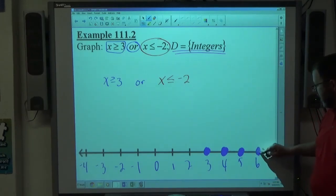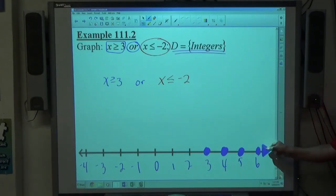The second graph, x is less than or equal to negative 2 is also ready to go. As long as you have x isolated, x all by itself, inequality symbol, you're ready to go.